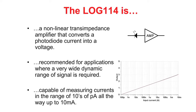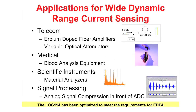The LOG114 can be used in applications where the input current ranges up to eight decades. This translates into an input current range that extends from a few tens of picoamps all the way up to 10 milliamps. Common markets for applications that require wide dynamic range current sensing are telecom, optical networking, medical and scientific instruments, and signal processing. The LOG114 has been optimized for applications within these markets with a particular emphasis on telecom and optical networking.